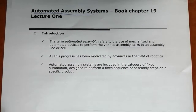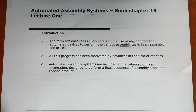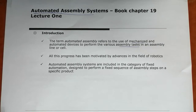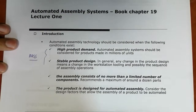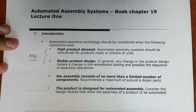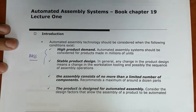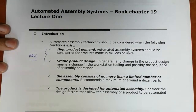After introducing manual assembly systems, the next part focuses on automated assembly systems using mechanized systems. Automated assembly is only applicable if certain conditions are met: high demand, stable product design, and the assembly consists of very few components. The product must be designed for automated assembly, making it suitable only for mass production.